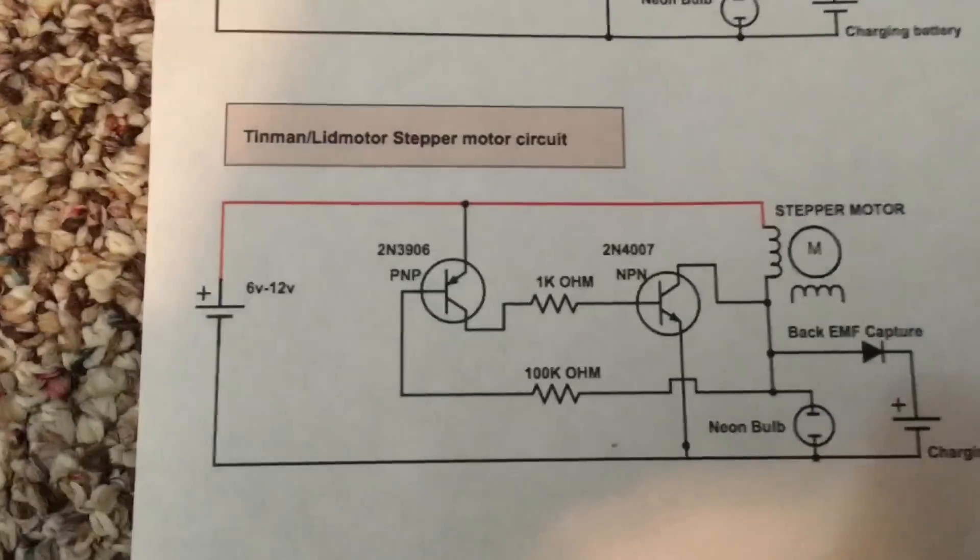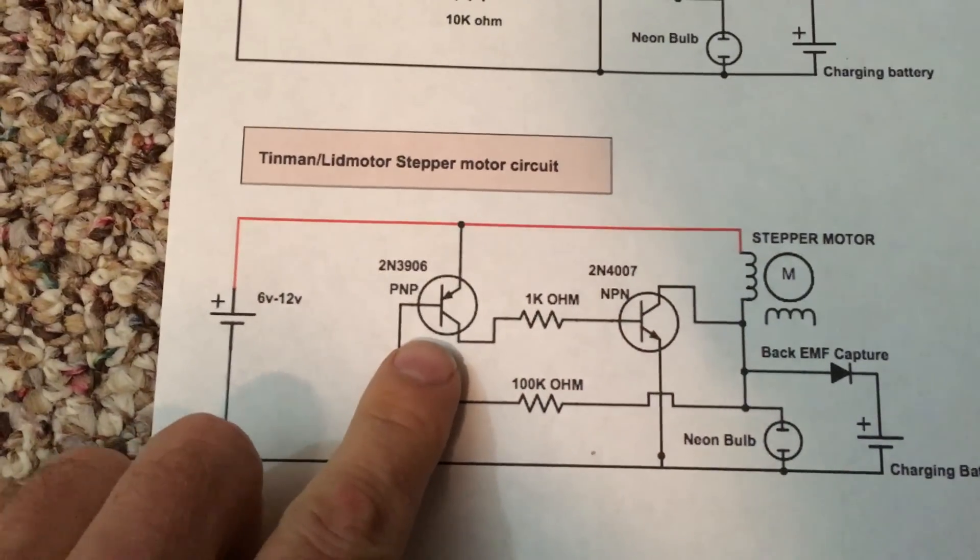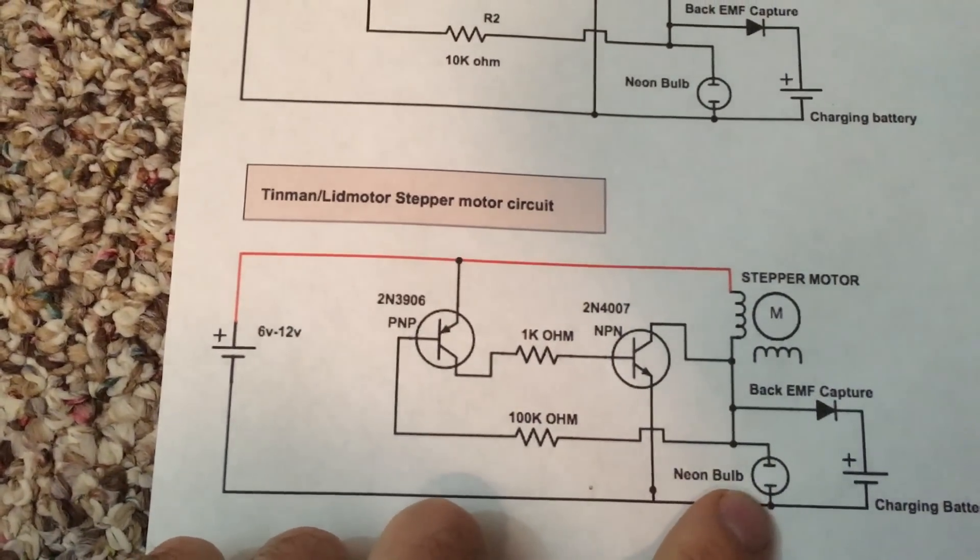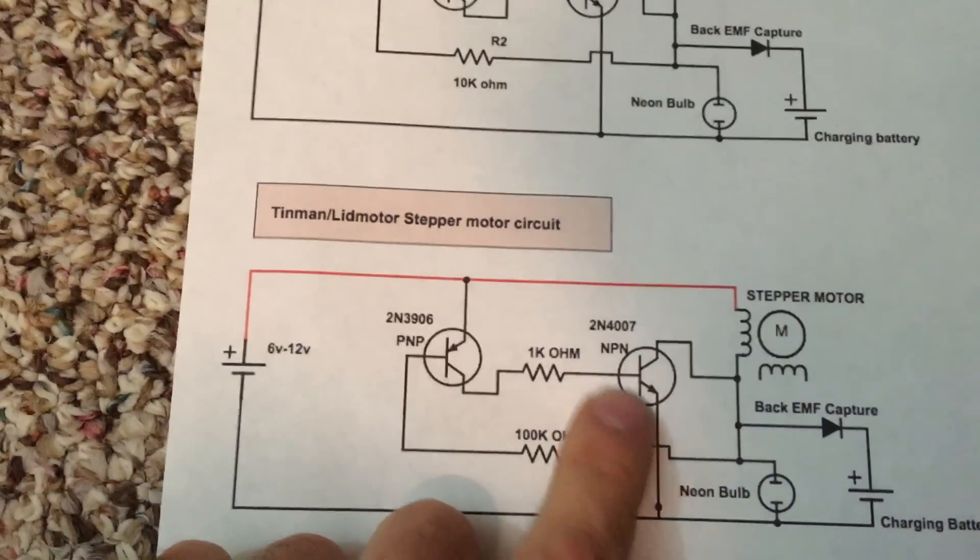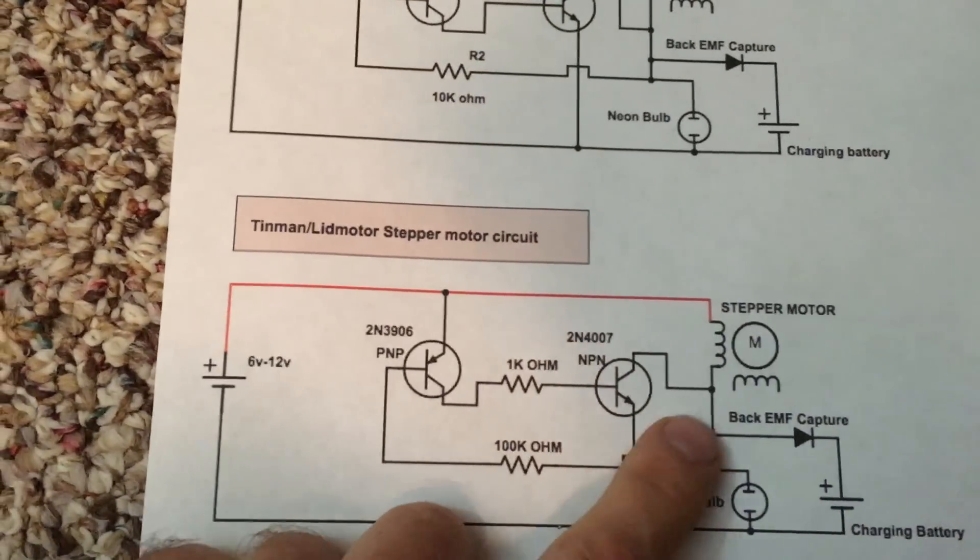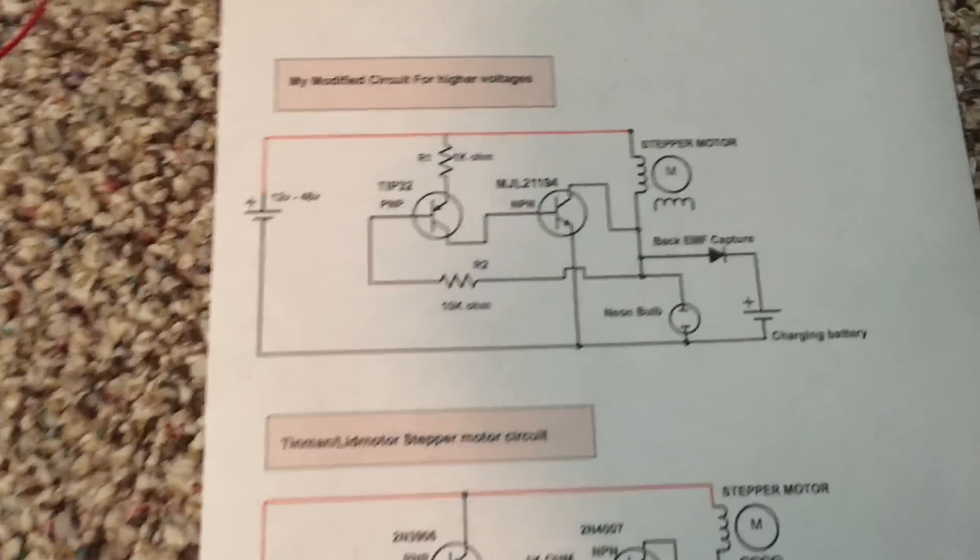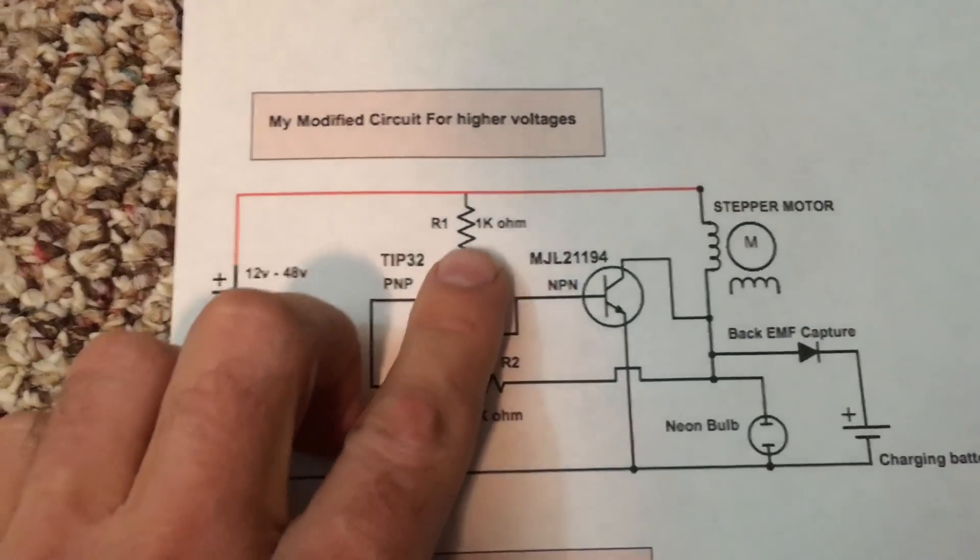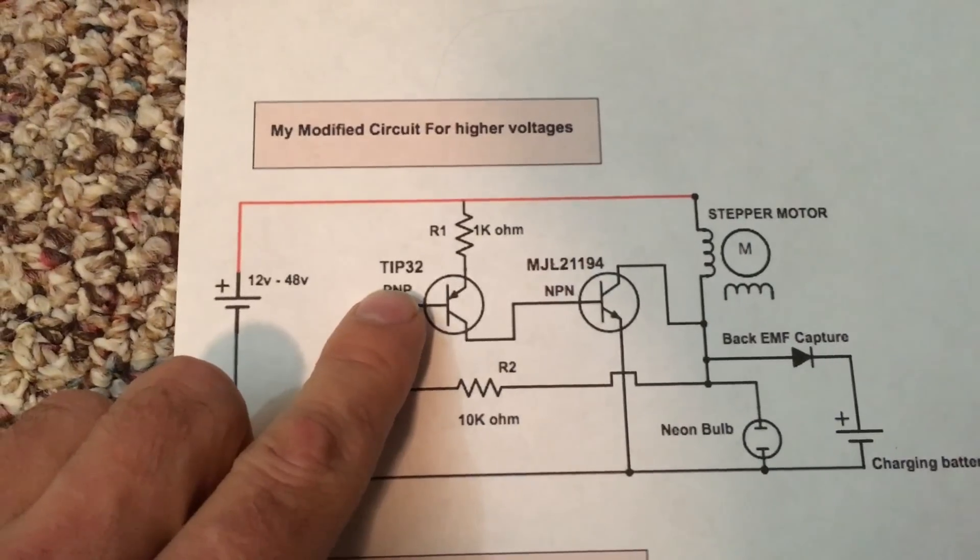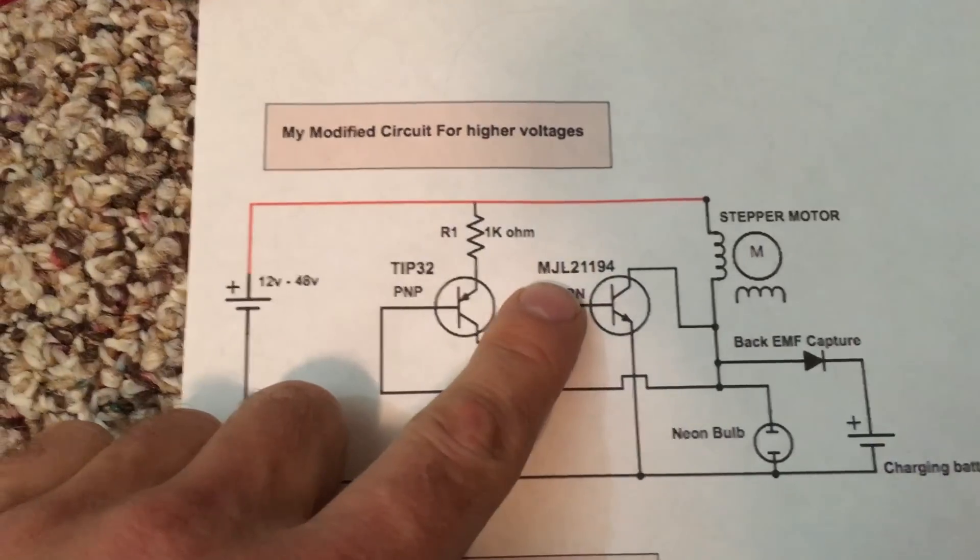Here's the circuit originally designed by Lid Motor and stepper motor circuit. You can see the transistors are low powered, neon bulbs are just designed to protect the transistor from the back EMF spike, and they were just running stepper motors. I'm doing the exact same thing on this one, but what I had to do was add a resistor here.